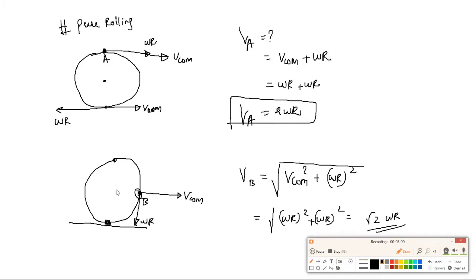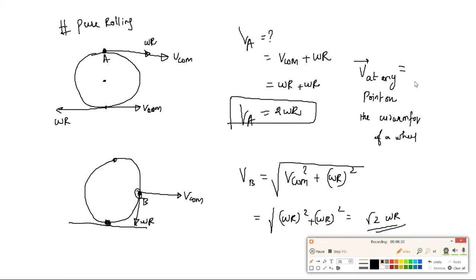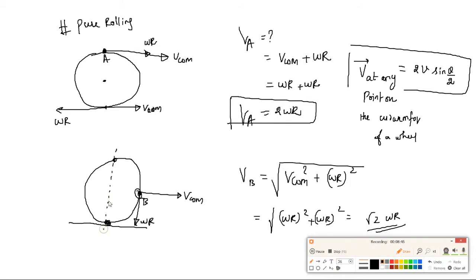The generalized formula for velocity at any point on the circumference of a wheel is: velocity = 2v·sin(theta/2), where theta is measured from the vertical axis (perpendicular) to the point. This is the general formula applicable to any point on the circumference.